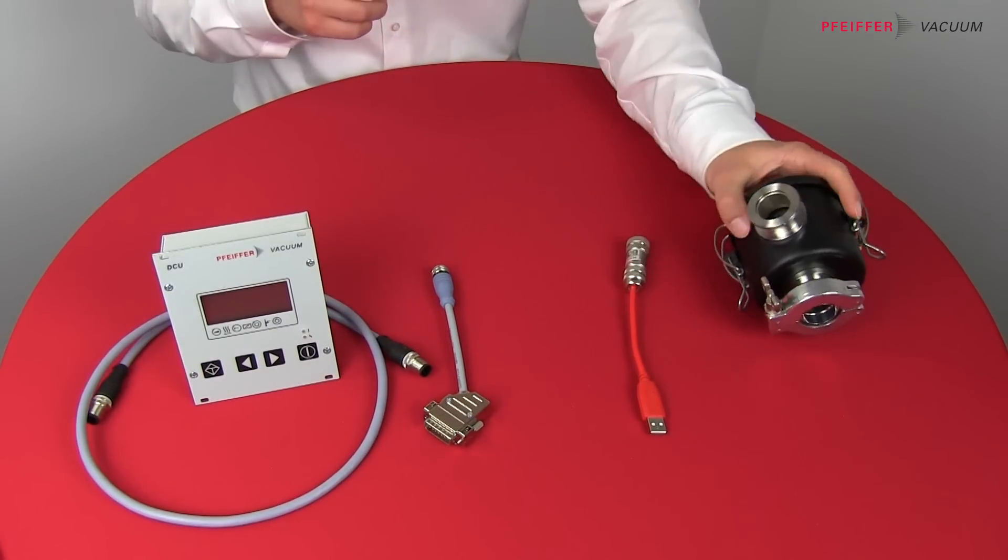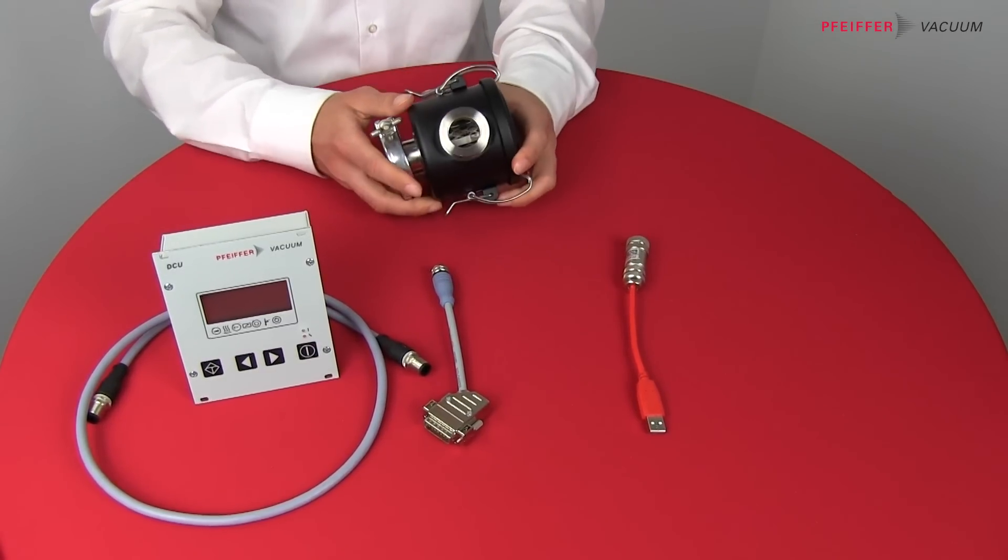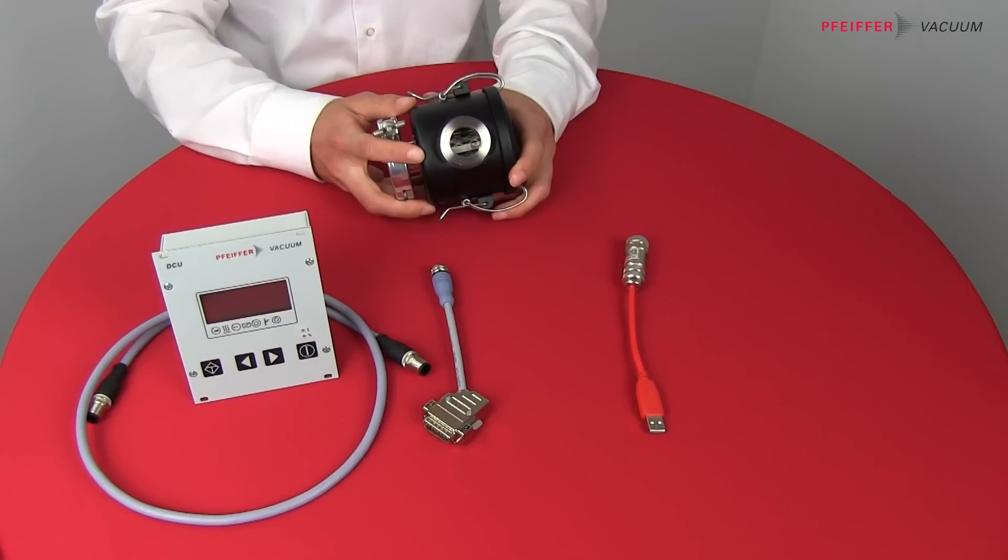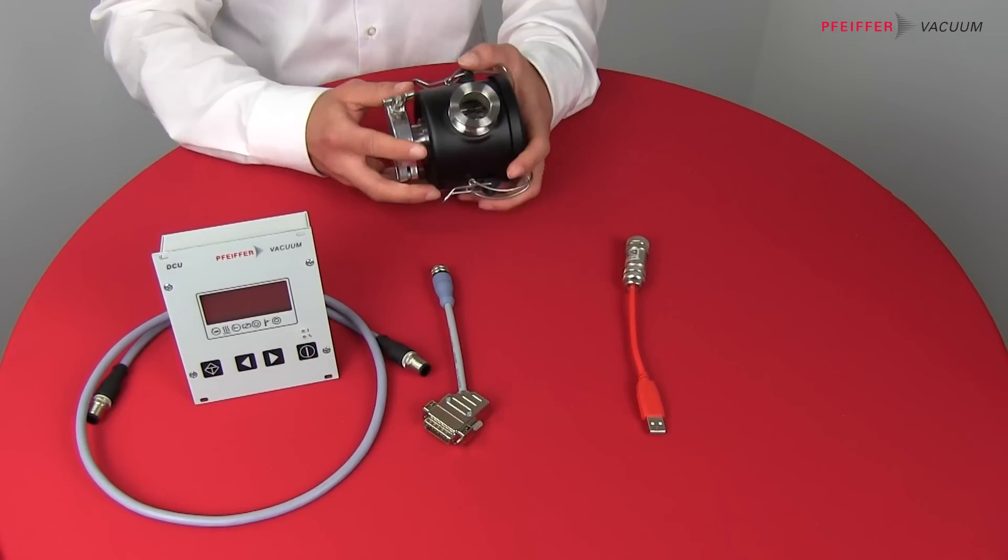Then there is a filter. This optional filter is filtering the dust created by the tip seal of the HiScroll. And it's installed at the exhaust flange of the pump.